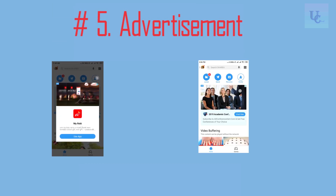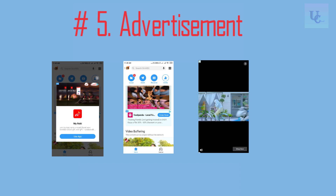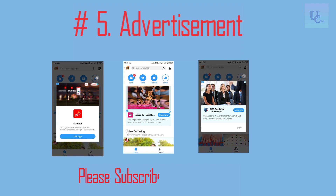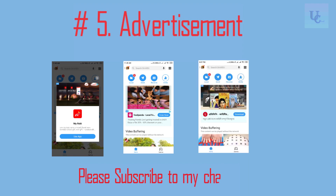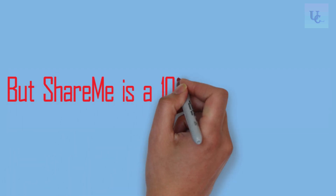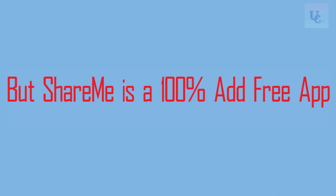Number 5: Advertisement. ShareIt has a huge amount of advertisements in every step, which kills your internet balance, wastes your time, and makes your phone slow. But ShareMe is a 100% ad-free application. So this point also goes to ShareMe.